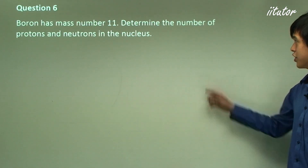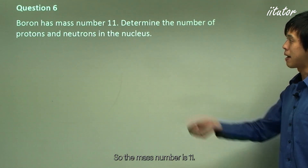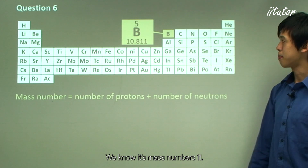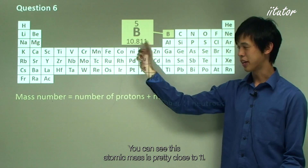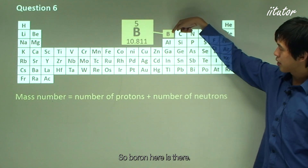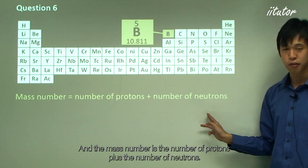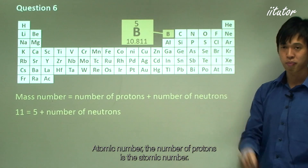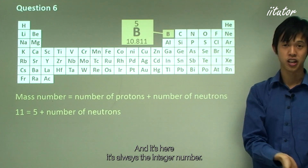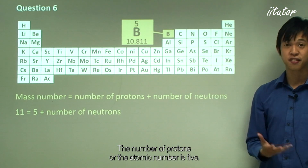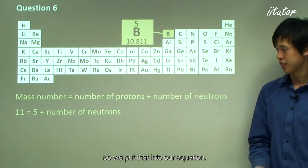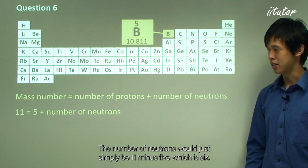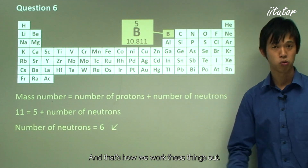Boron has a mass number of 11. Determine the number of protons and neutrons in the nucleus. Consulting the periodic table, boron's atomic number is 5, so the number of protons is 5. Since mass number equals protons plus neutrons, we get 11 = 5 + neutrons, so the number of neutrons is 11 minus 5, which equals 6.